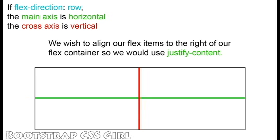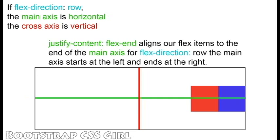Our FlexDirection is set to Row, and we would like to align our FlexItems to the right of our container, so we will use the JustifyContent property. To align our FlexItems to the right, we set JustifyContent to FlexEnd. This moves our FlexItems to the end of our main axis. With FlexDirection set to Row, the main axis starts at the left and ends at the right.